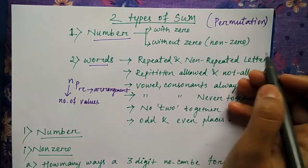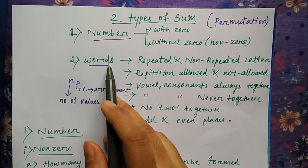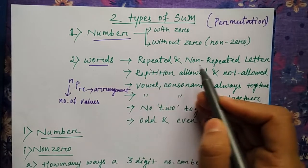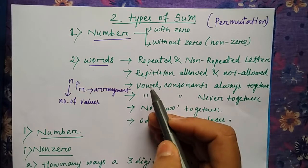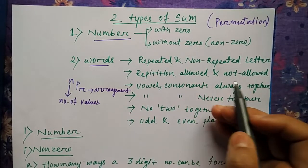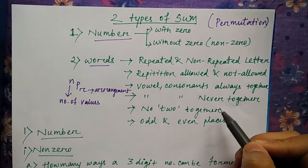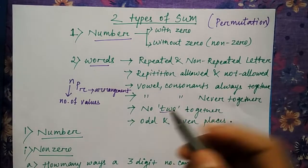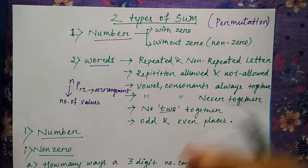When you consider words, words can be of repeated and non-repeated letters—repetition allowed or not allowed, vowels and consonants always together, never together, no two words together, and odd and even places. These things will be more clear when we go to the examples.